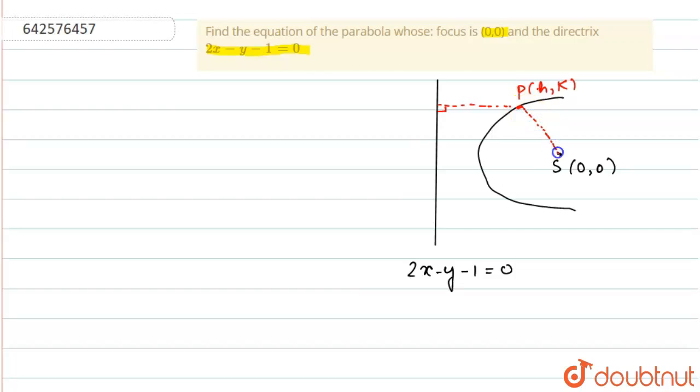So, let this point be M, so we can write this as PM = PS. Now, we can calculate PM. PM formula will be,